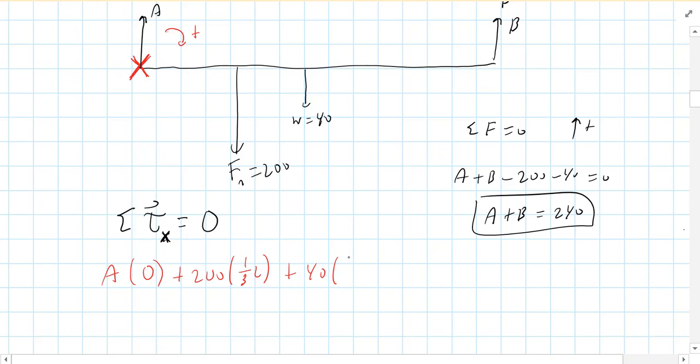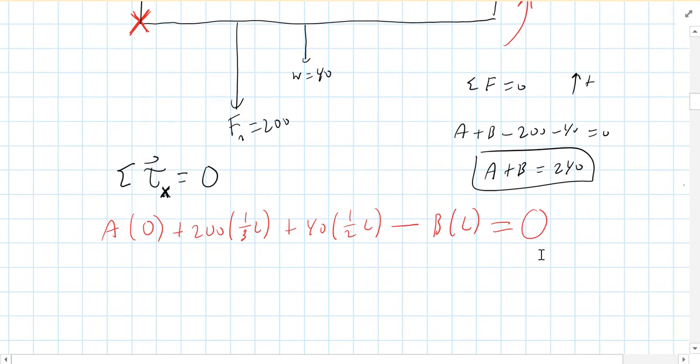And then B is trying to make the board spin counterclockwise. So that's going to be minus in our system. And then you're going to have B times the length of the board. And because the board is in static equilibrium, you know, this entire thing has to equal zero.